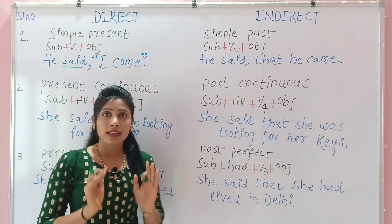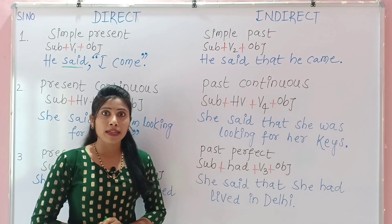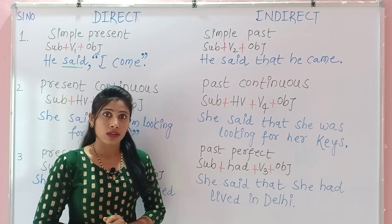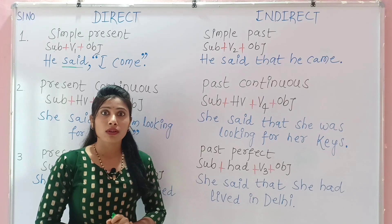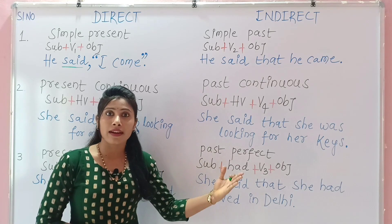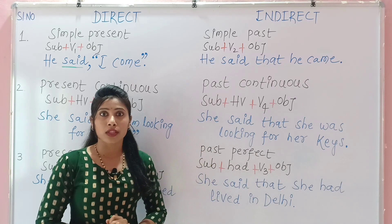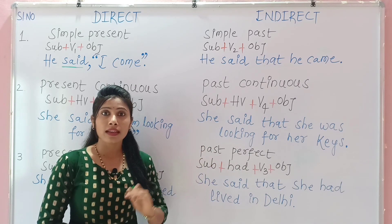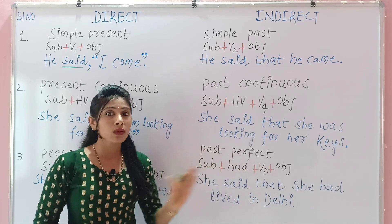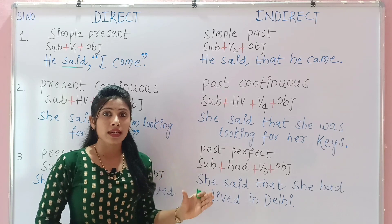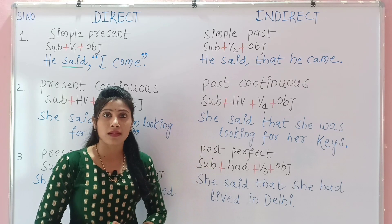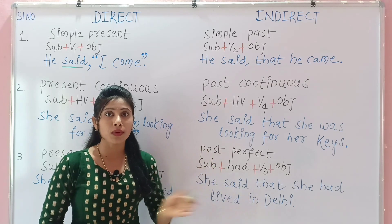The next rule is: the tense may not change if the statement is still relevant, or if it is a universal or general truth, a true fact, or something just said. For example, 'He said, I am left-handed' — in indirect speech: 'He said that he is left-handed,' because it is a fact that is still true. For universal truth: 'The teacher said the sky is blue' — in indirect speech it remains the same: 'The teacher said that the sky is blue.'